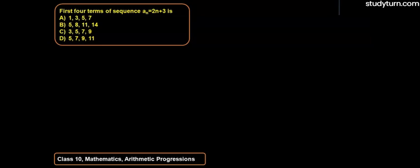So the question given here is, find the first 4 terms of sequence that is an equals to 2n plus 3. Options given here are, option A is 1, 3, 5, 7, option B is 5, 8, 11, 14, option C is 3, 5, 7, 9 and option D is 5, 7, 9, 11.